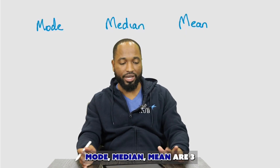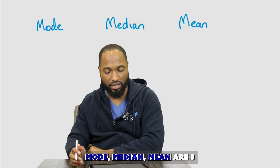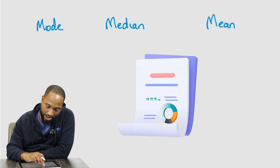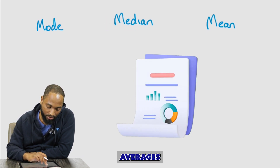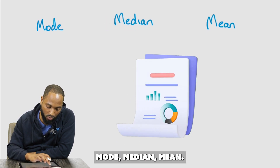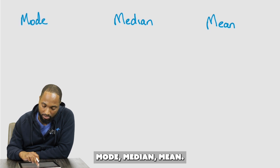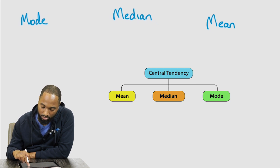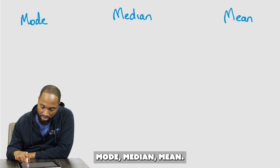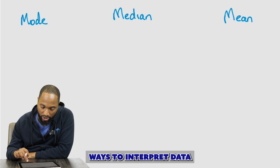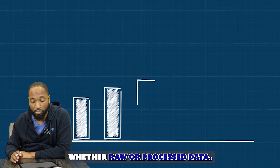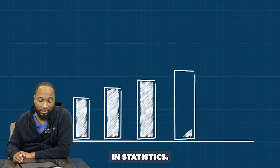Mode, median, mean — three measures of statistical averages, also called central tendencies — are ways to interpret raw or processed data in statistics.